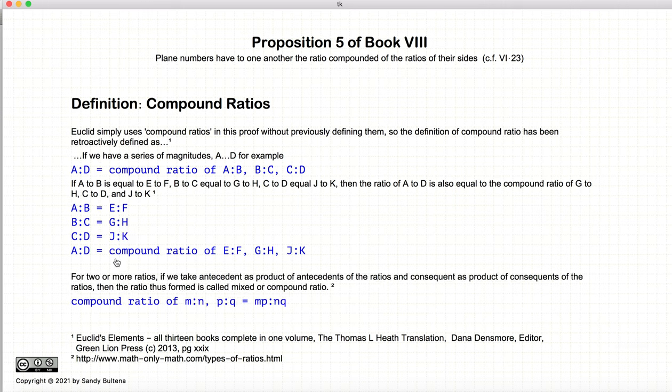Another definition that I got online for math only math: the compound ratio of M and N and P and Q would be M times P and N times Q to give us the compound ratio MP to NQ. As a consequence of all these definitions, A to D, which is the compound ratio of A, B, C, D, is also equal to E times G times J divided by F times H times K. So, that is the definition of a compound ratio.